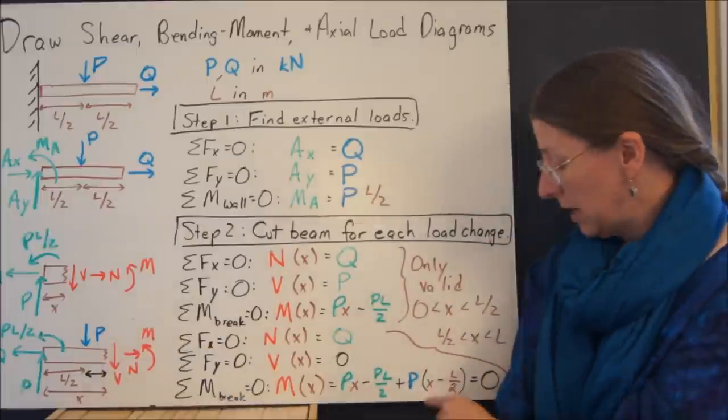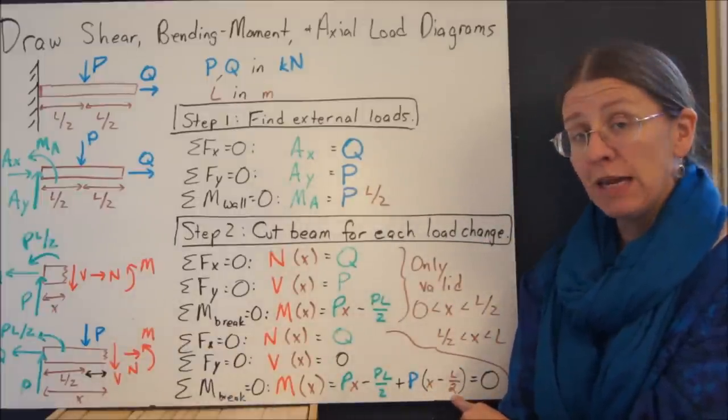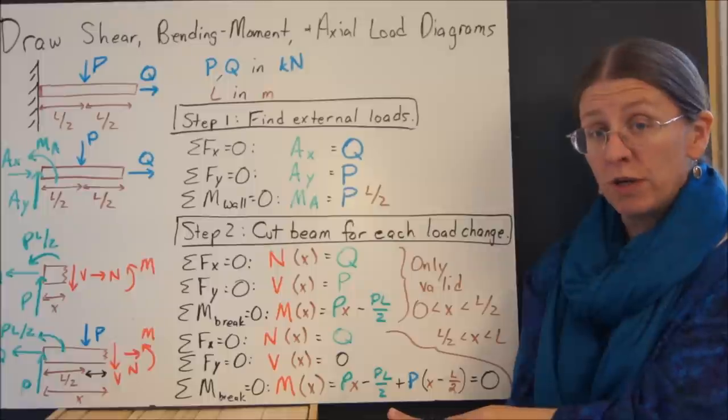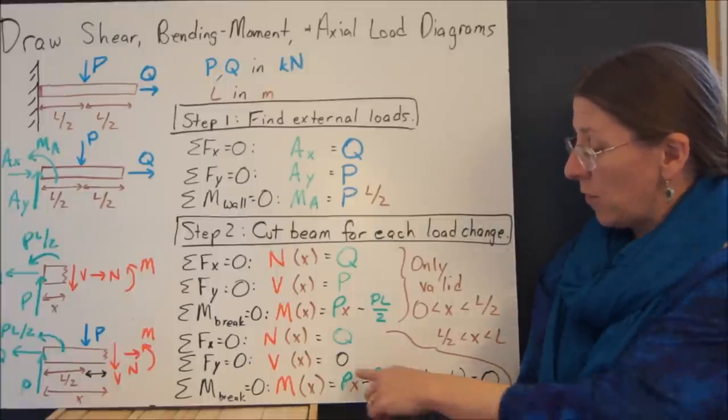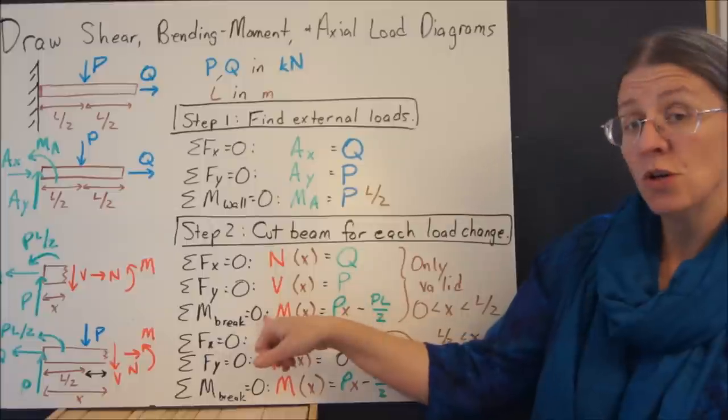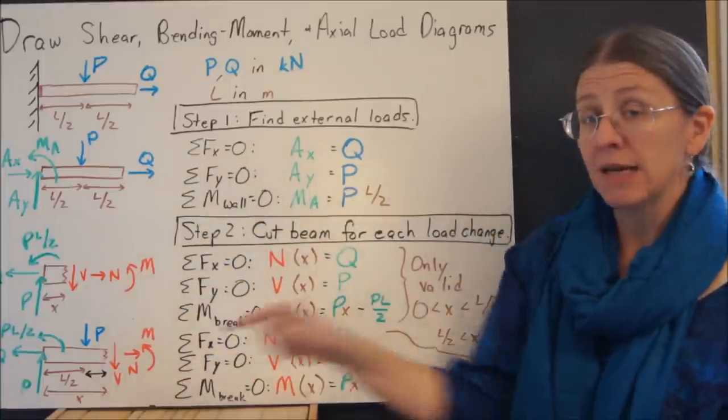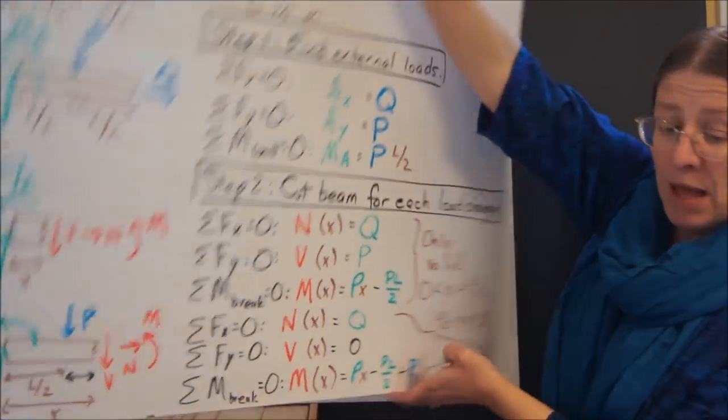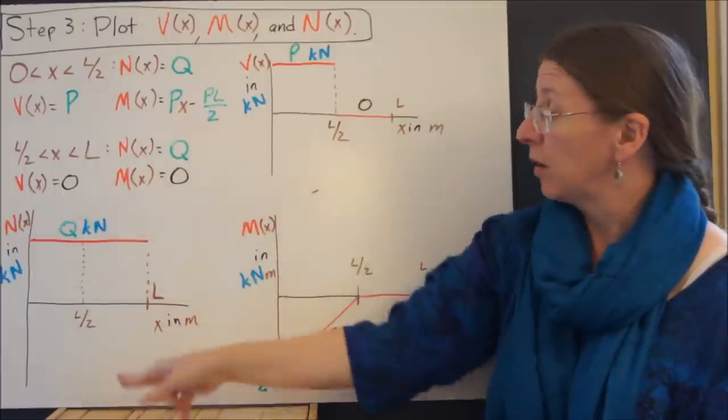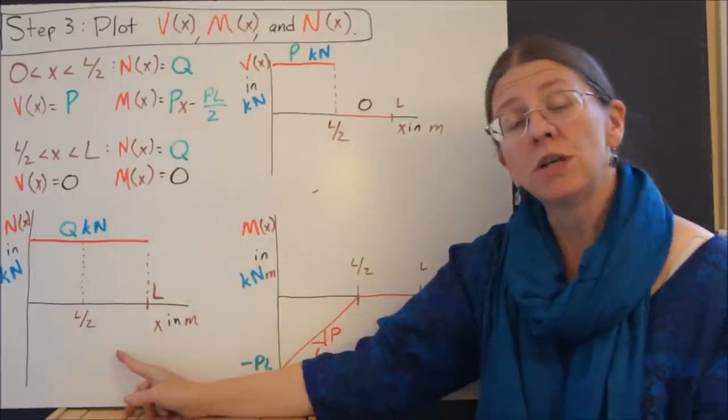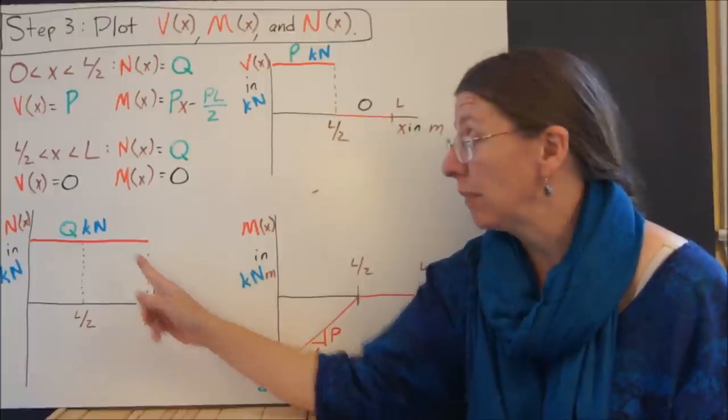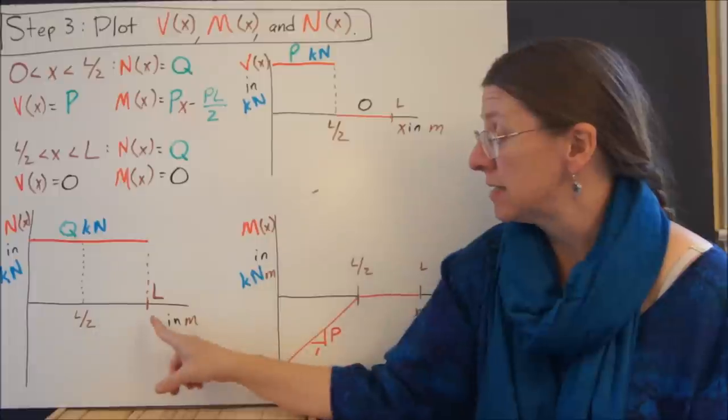My distance now is x minus L over 2. That's this little black distance right here. This distance is how far away the break is from my mid-applied P. Be careful with your algebra here. Here I have my internal loads as a function of x for both the first part of the beam and the second part. Step 3 is plotting them. N is equal to Q all the way along because nothing changed in the middle of the beam.